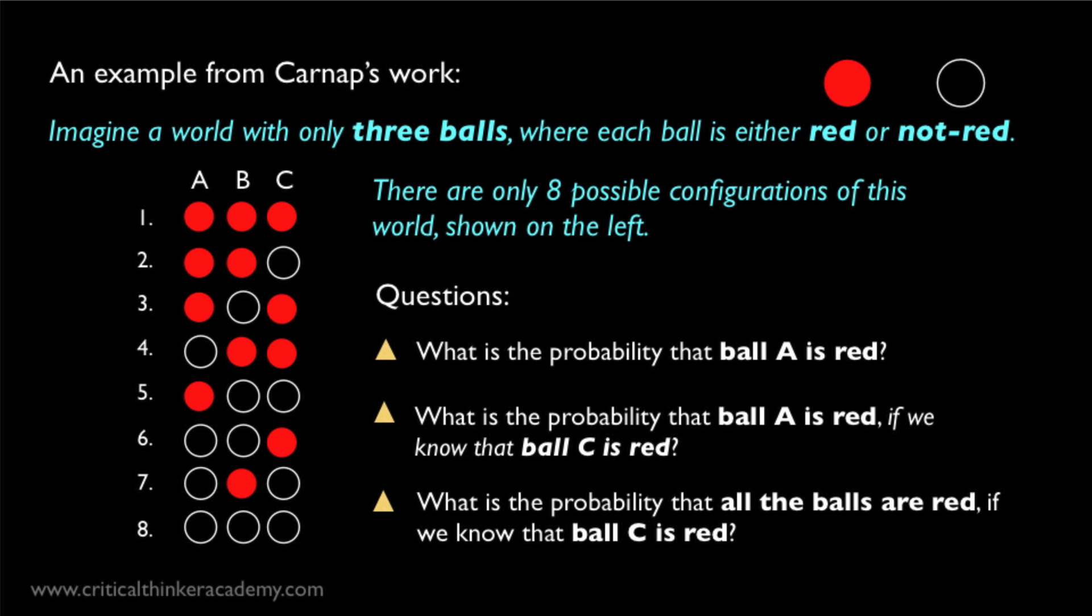So Carnap, for example, tries to define a confirmation function that applies to formal languages. And to illustrate the idea, he uses little toy models of worlds with, say, only three objects in them, and only one property that each object either has or doesn't have. In these toy worlds, you can list all the possible states that such a world can be in, and you can define different event types as subsets on this state space. And when you do this, you can show how, given information about one of the objects, you can formally define how likely it is that certain facts will be true of the other objects.